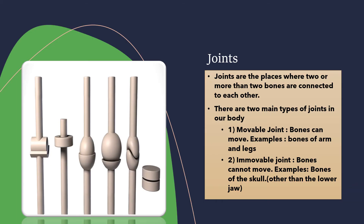Joints are the places where two or more bones are connected to each other. These connected points are called joints. There are two main types of joints in our body.